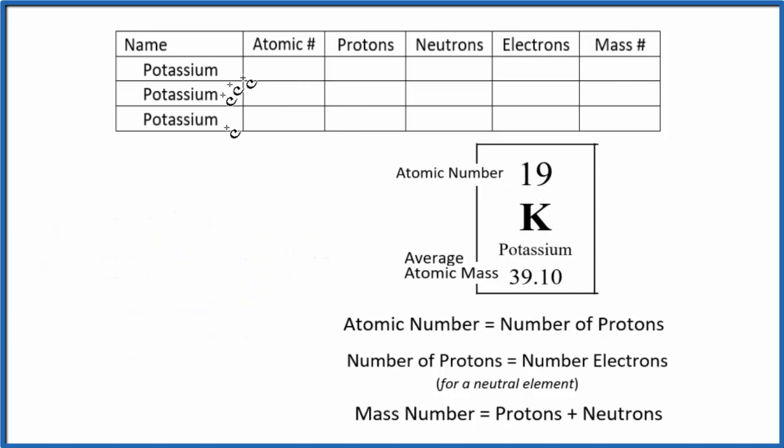So potassium has three major isotopes, and we'll talk more about those isotopes later. But right now, let's write the things that we know are the same for all of the isotopes.